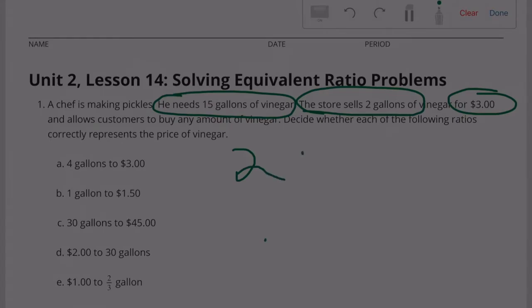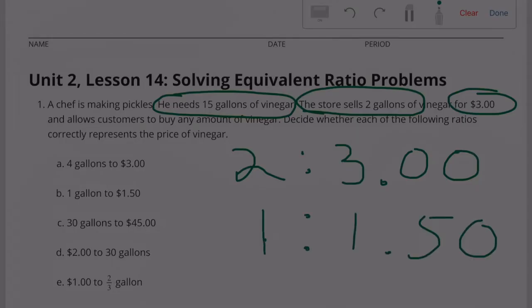2 gallons of vinegar is $3. And if 2 gallons of vinegar is $3, then 1 gallon of vinegar would be $1.50. Option A: 4 gallons to $3. No, that's not true because we know it's 2 gallons to $3.